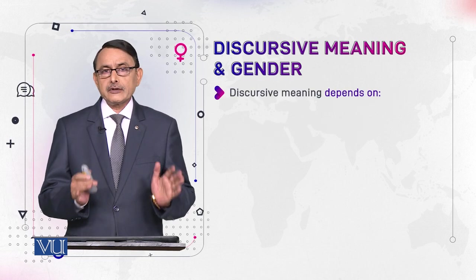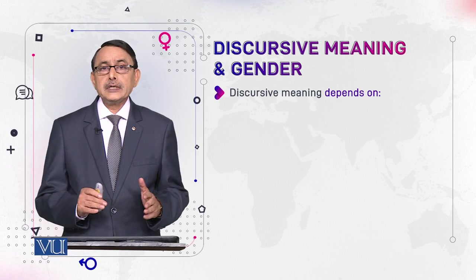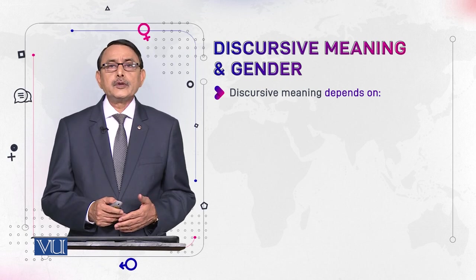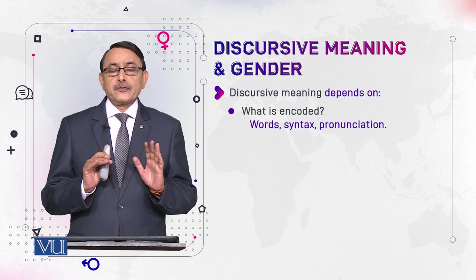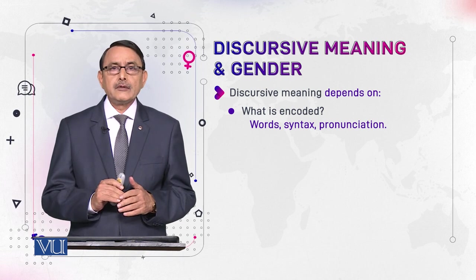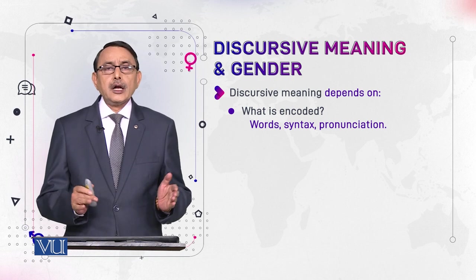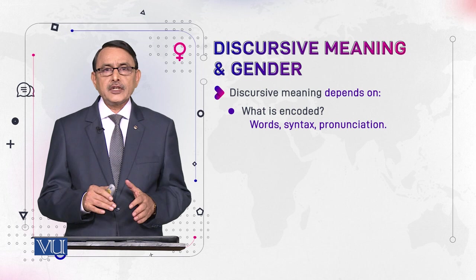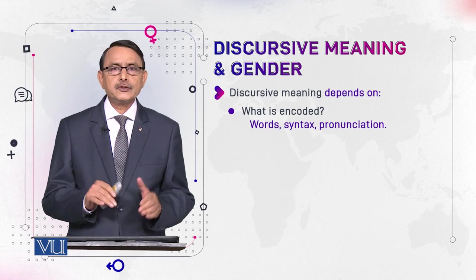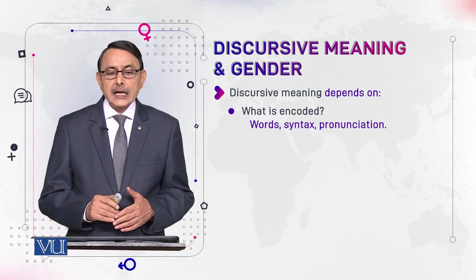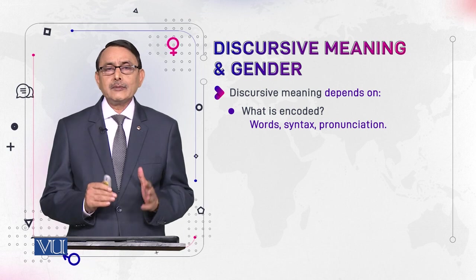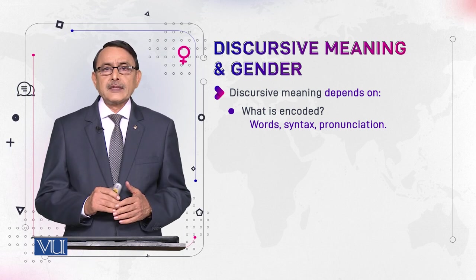Discourse meaning depends on several things. First, we talk about how we derive meaning from discourse, and then how this meaning is linked with gender. It depends on how encoding is done. Whenever we talk, there is some idea in our mind. We encode this idea into words, combine those words, organize them by following certain grammatical rules — that is syntax — and then we utter it, being careful about pronunciation. This is encoding.